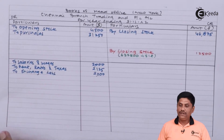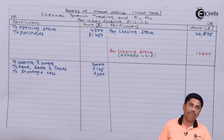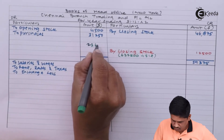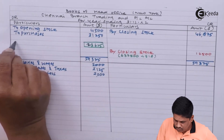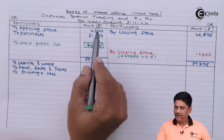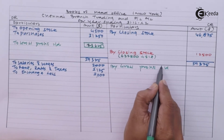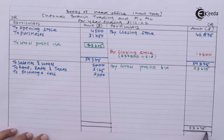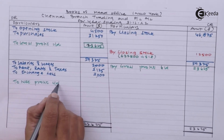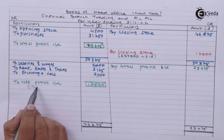We have completed the trial balance posting. Now I need to find out gross profit, net profit, and then finally take a total of the balance sheet. Gross profit is 23,625 dollars. Net profit is 17,500 dollars, which is transferred to the head office.